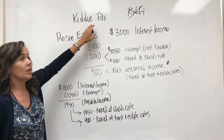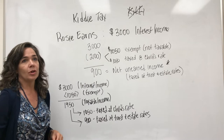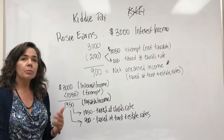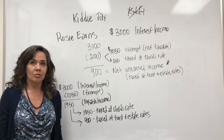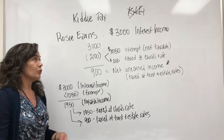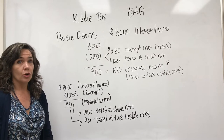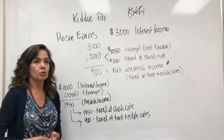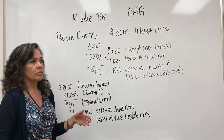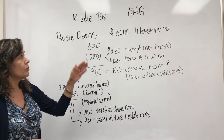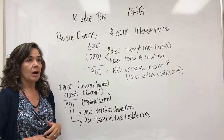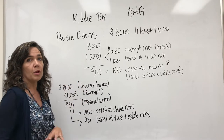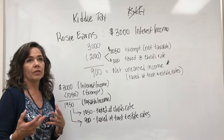A kiddie tax was implemented because savvy taxpayers were saying, if I put all of this income in my child's name, they would be paying at a much lower rate than I would, and so they would get a huge tax break. So the IRS countered that and said there's such a thing as kiddie tax, meaning that if your child earns investment income — interest income, dividends, stock — unearned income — and they have large amounts of it, it's going to be taxed at a higher rate, not at the child's rate. That was a move to prevent people from putting stock in their child's name to pay taxes at a much lower rate.